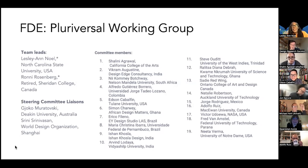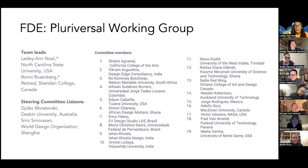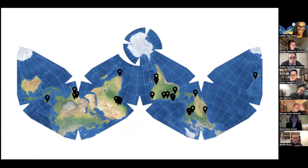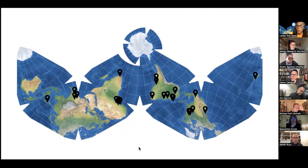Our group had almost 20 people — Charlini, Vikram, Nee, Alfredo, Edson, Simon, Eriko, Chris Ibarra, Ishan, Coastler, Arvin Lodaya, Steve Wooded, Deborah, Sadie Redwing, Natalie Robertson, Jorge Rodriguez, Fred van Armstel, and others. We were from many different places across the world, with representation from the Caribbean, Latin America, and beyond, trying to get many many perspectives.